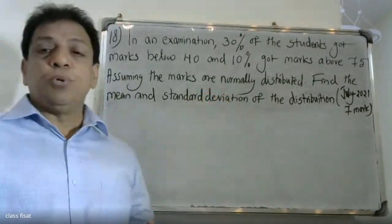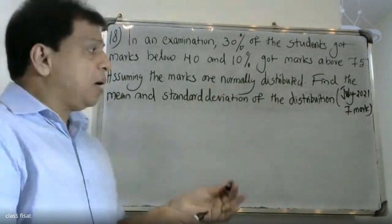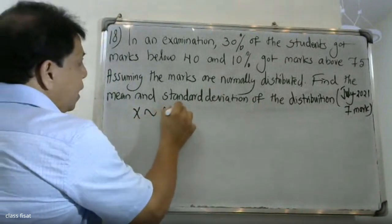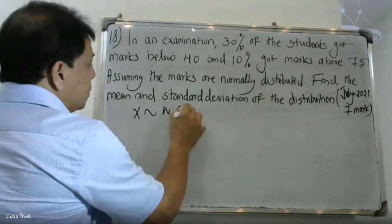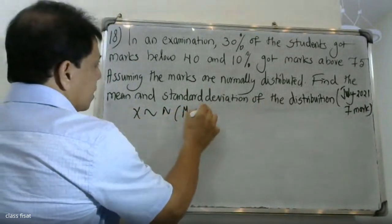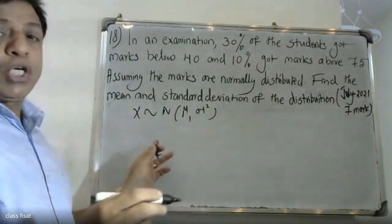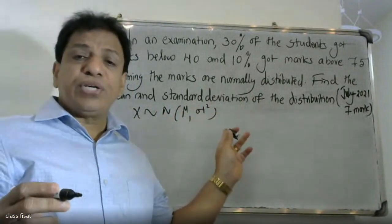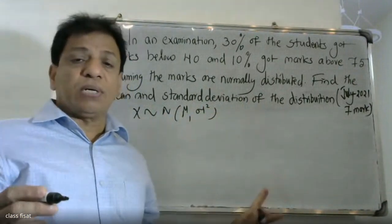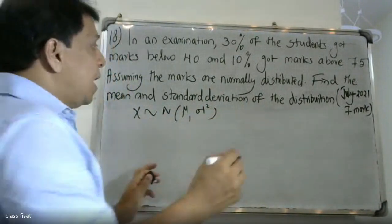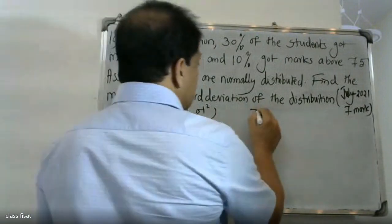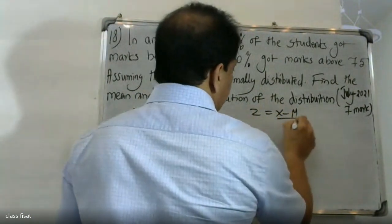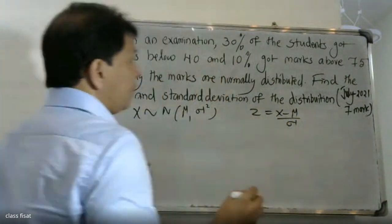The marks are normally distributed. X follows N(mu, sigma squared), where the mean is equal to mu, the standard deviation is sigma, variance is equal to sigma squared, and the standardized variable is Z equals X minus mu by sigma.